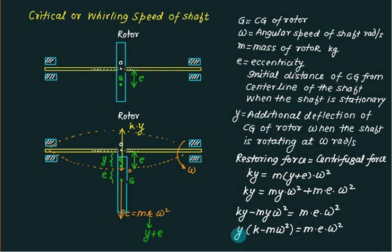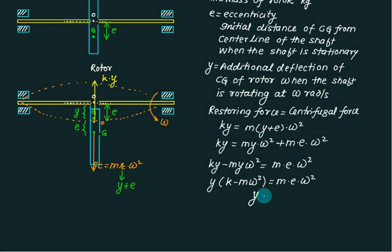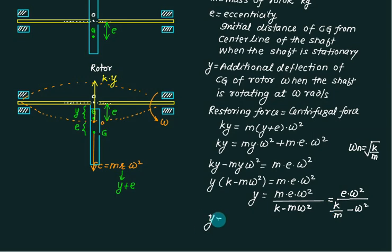We can find the deflection Y. Y = m·E·ω² / (K - m·ω²). Dividing numerator and denominator by M, we get Y = E·ω² / (K/M - ω²). We know that K/M is natural frequency squared, so ωN = √(K/M). We can replace this by ωN². So Y = E·ω² / (ωN² - ω²).